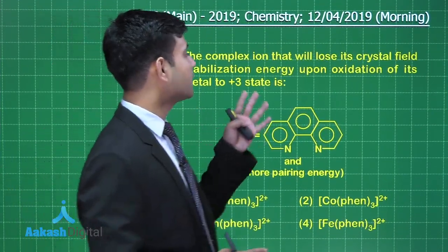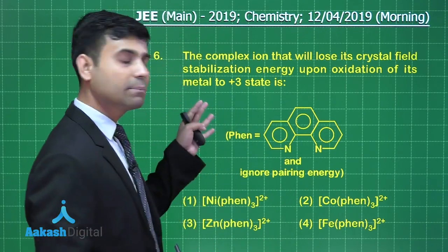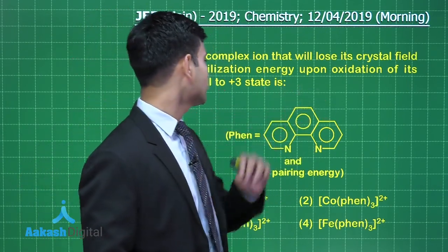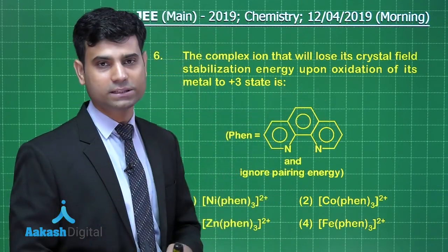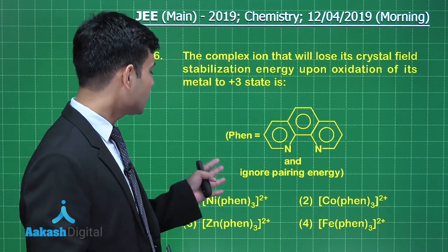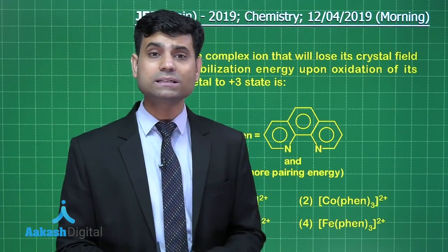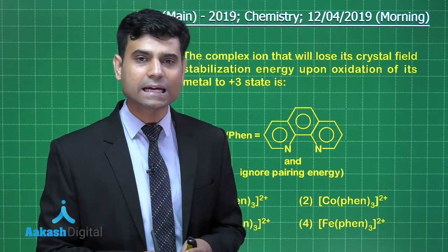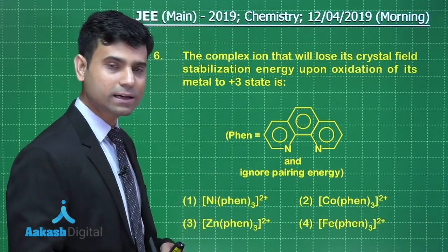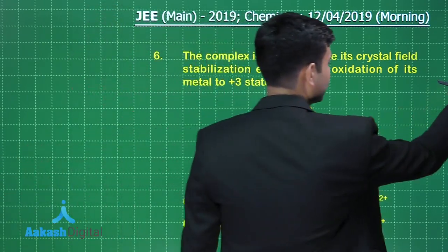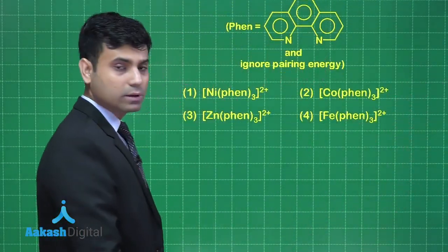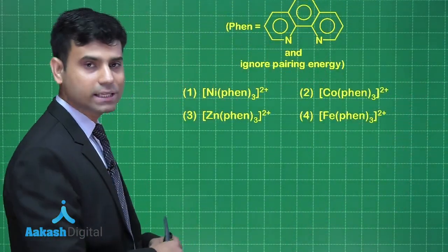Now let's move to the next question. This is the next question we have. It says the complex ion that will lose its crystal field stabilization energy upon oxidation of its metal 2+ to 3+ oxidation state. Here we need to ignore the pairing energy, that means we have to consider the ligand is strong field ligand. So students, the options are here, we can see four options. So let's write the configuration in all these cases.